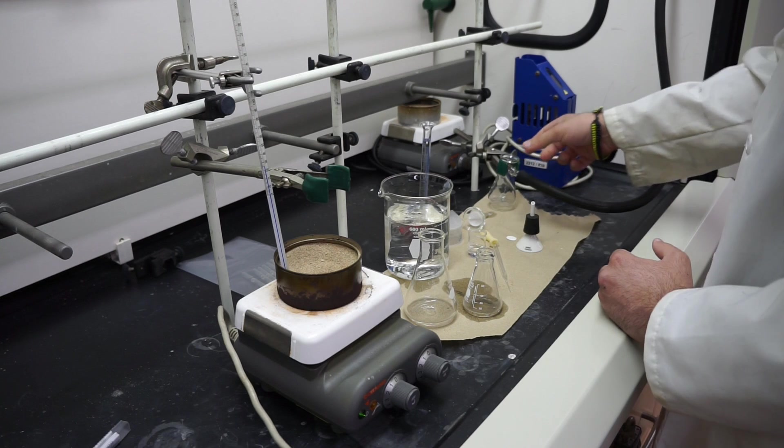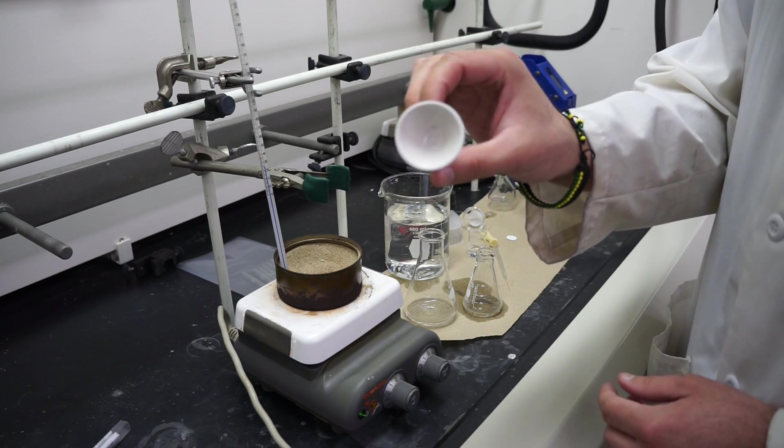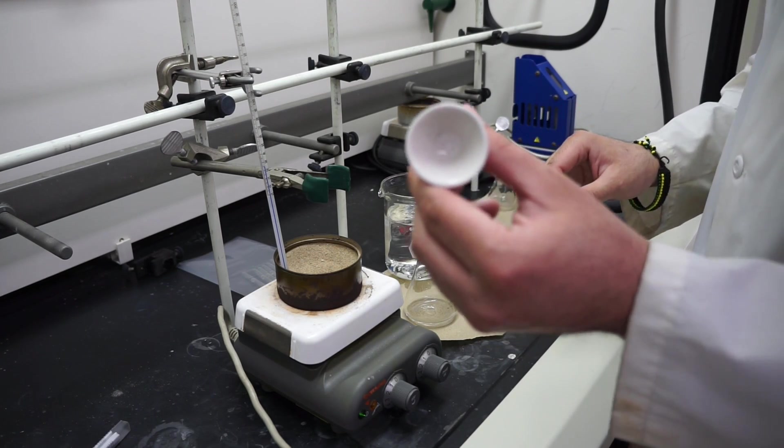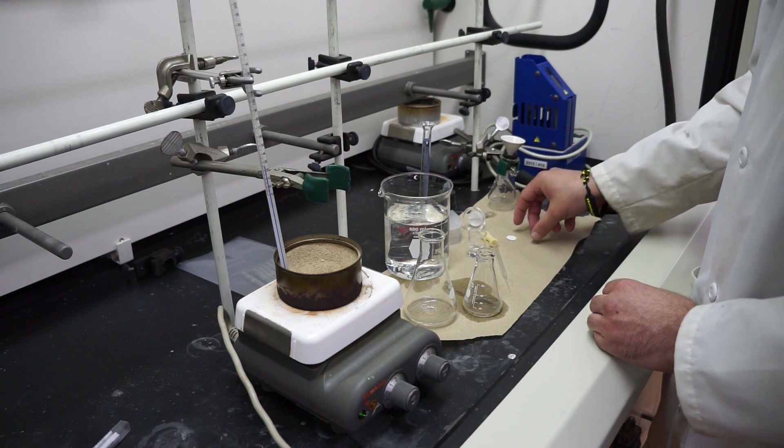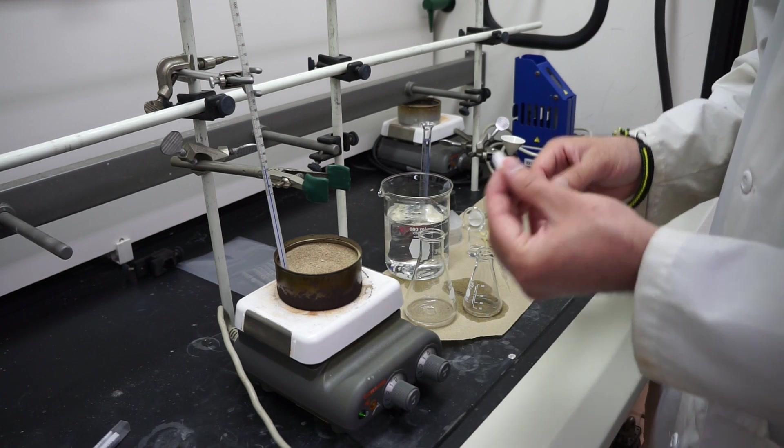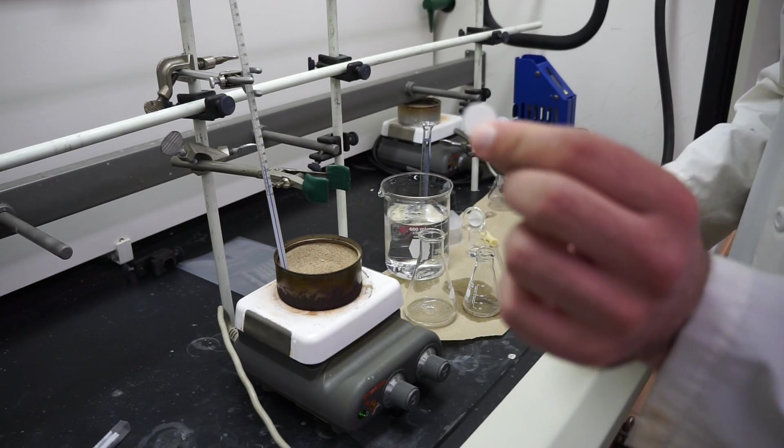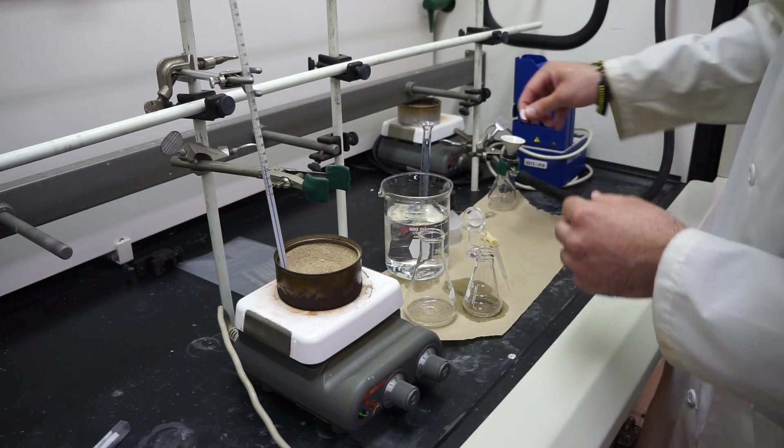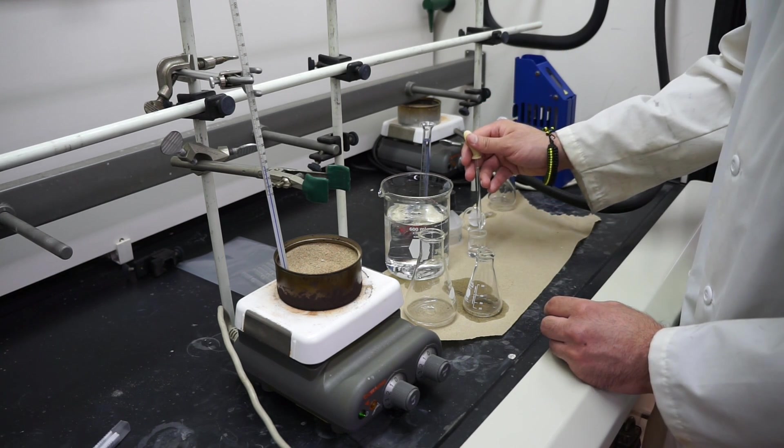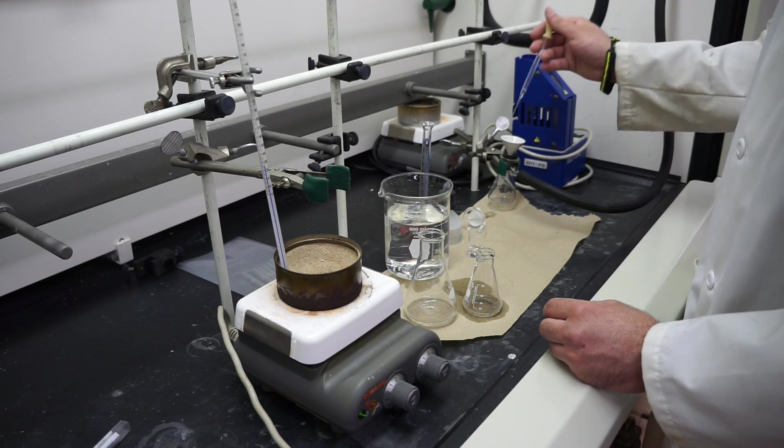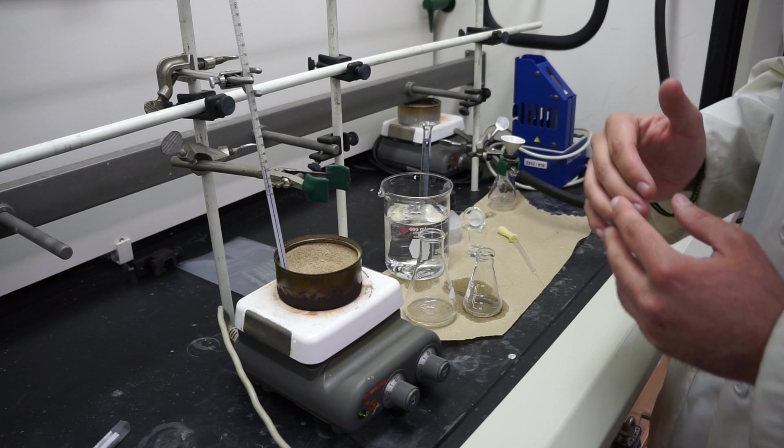Set up the clamp over the filtration flask. For this example, I'm using the Hirsch funnel, but you may want to use the Buchner depending on how much stuff you have. Put it on right there. Get a little piece of filter paper—for the Hirsch funnel, it's these little circles. For the Buchner, you might use something bigger. Put it over the top, then get it wet with whatever solvent you're using so the paper sticks to the bottom and nothing creeps in underneath.